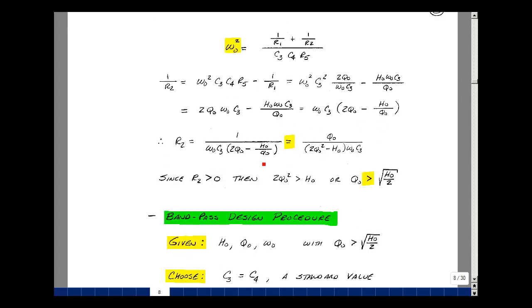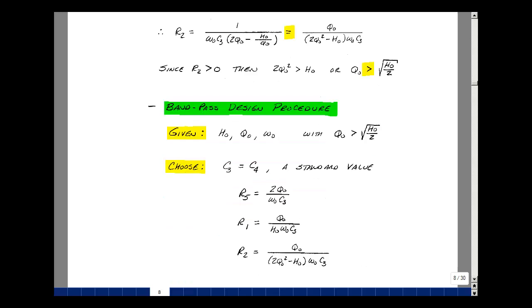R2 then is 1 over this. Multiply the numerator and denominator by Q-naught, and I get Q-naught, omega-naught C3, 2Q-naught squared minus H-naught. You can see that this resistor could possibly go negative. I've got another constraint to worry about, and that's the values of H-naught and Q-naught. This is implying that for a positive resistor, 2Q-naught squared is greater than H-naught. What we could solve for this is that Q-naught needs to be greater than H-naught over 2 square root.